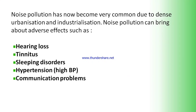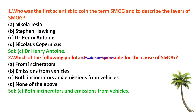Let's start our question and answer session. First question: Who was the first scientist to coin the term smog and describe the layers of smog? Options are Nikola Tesla, Stefan, Dr. Henry, or Nicholas. The right answer is Dr. Henry. Next question: Which of the following pollutants are responsible for the cause of smog? From incinerators, emissions from kilns, both incinerators and emissions from kilns, or none of the above. The answer is both incinerators and emissions from kilns.